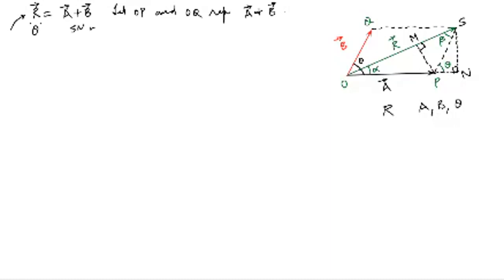SN is normal to the extension of OP. From the geometry of this figure, in this right angle triangle, OS is the hypotenuse. So OS squared equals SN squared plus ON squared.